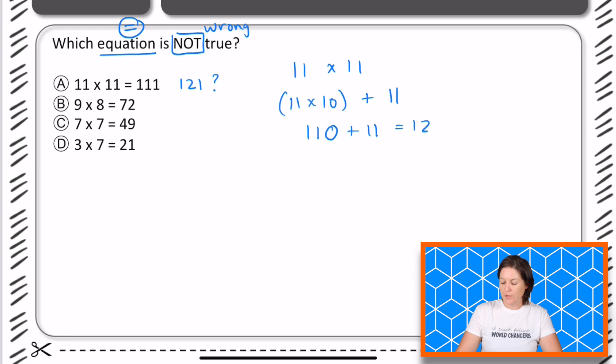So if 11 times 10 is 110, one more 11 would be 121. That's just a side note.